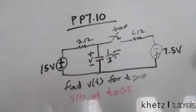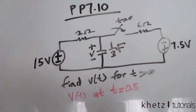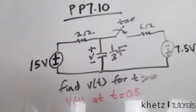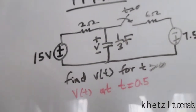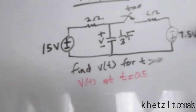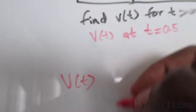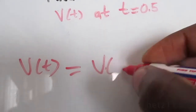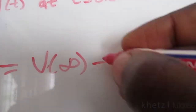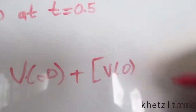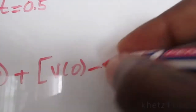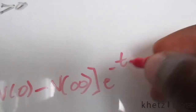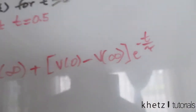Given the circuit, we are asked to find v(t) for time greater than zero and v(t) at time equals 0.5. This section is called step response of an RC circuit. The general formula for the response of such a circuit is: v(t) = v(∞) + [v(0) - v(∞)] multiplied by e to the power of negative t divided by the time constant.